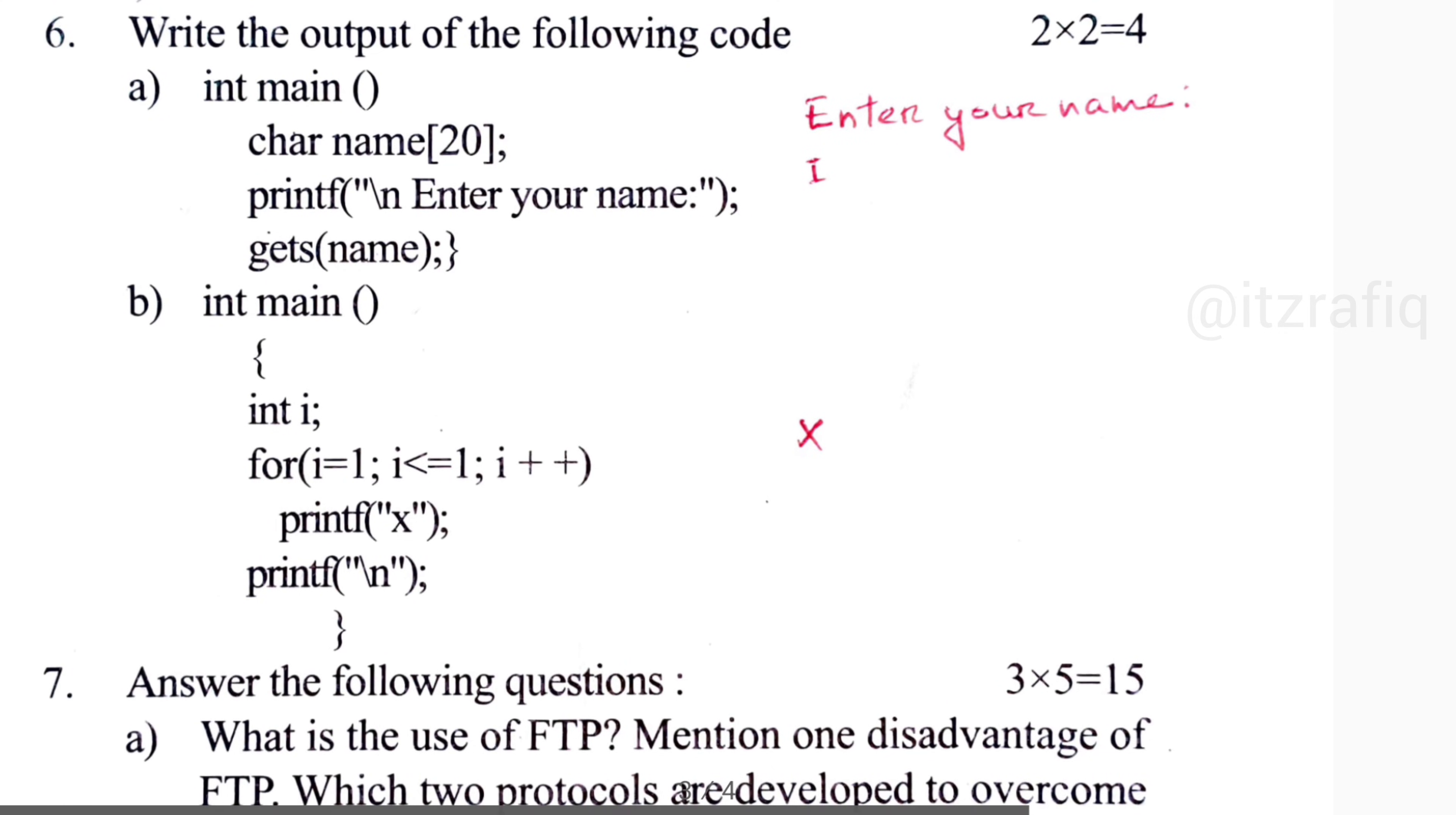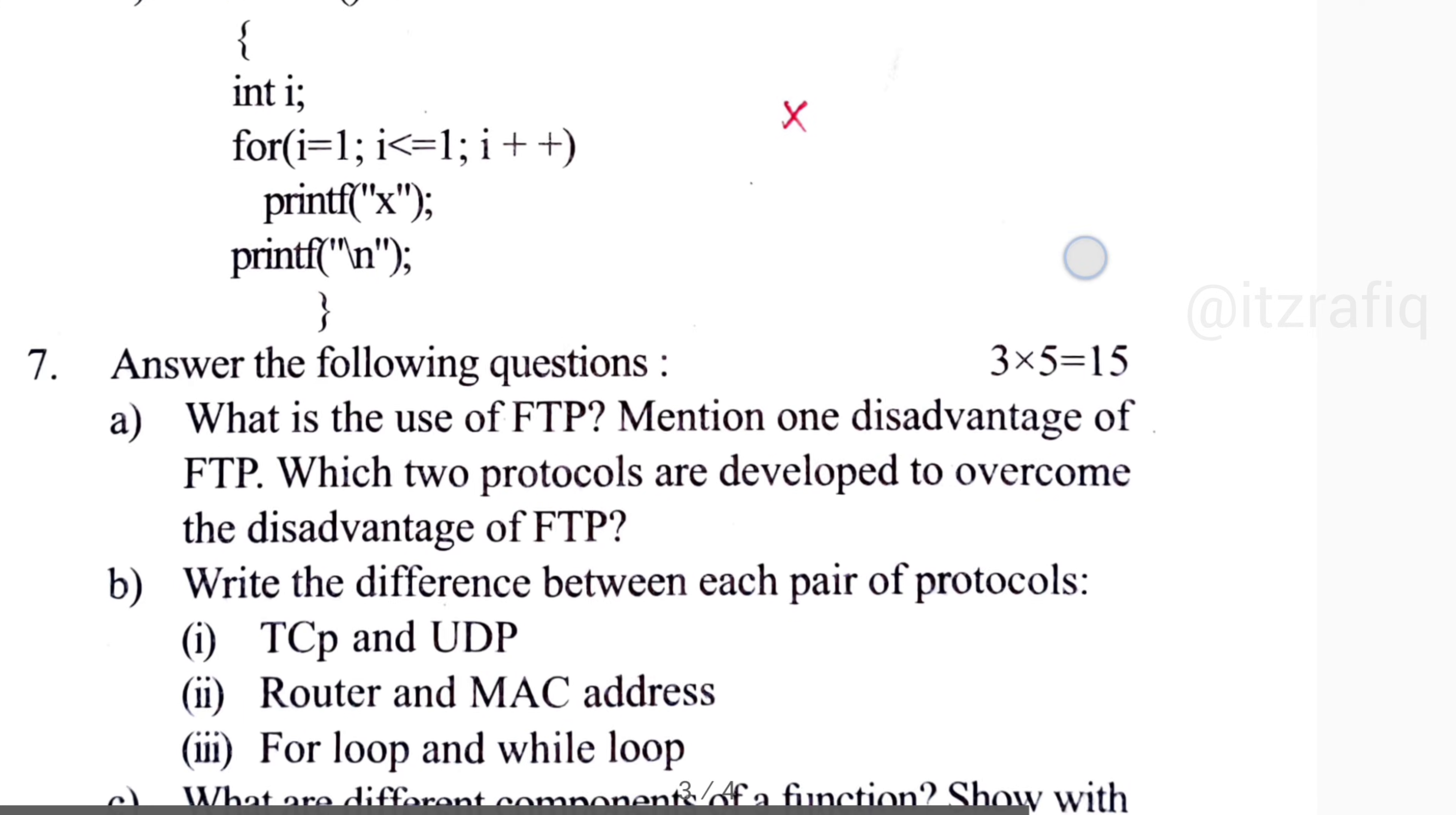So if you write, if you compile the program, you will get the output this way: enter your name, and you will write your name, whatever that much. Then number B, the output will be only one X.